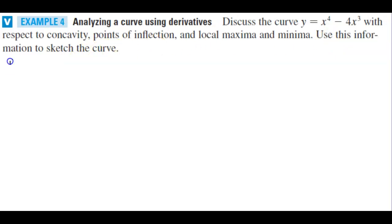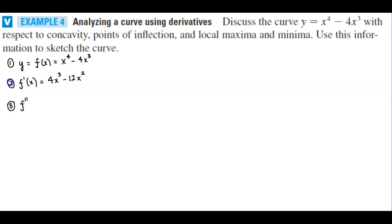Let's first write down our function: y equals f of x equals x to the fourth minus 4x cubed. We'll find the first derivative: f prime of x equals 4x cubed minus 12x squared. And then the second derivative: f double prime of x equals 12x squared minus 24x.